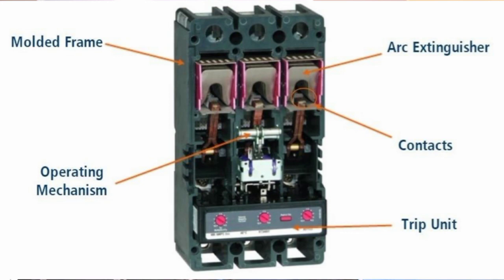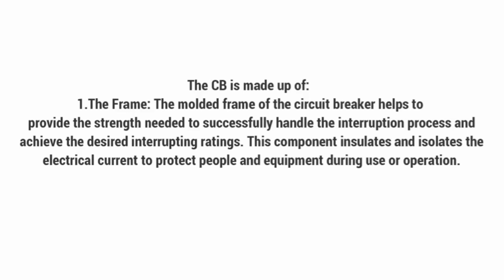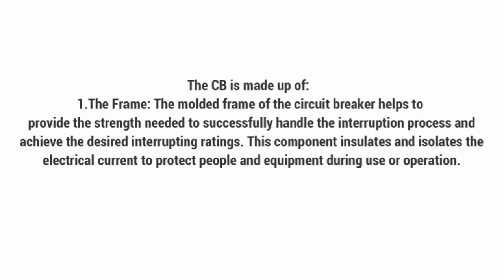Now we're going to discuss the parts of the circuit breaker — what makes it trip on its own and what triggers it. There are five major parts. The first is the frame. The frame is the molded compartment that houses the entire circuit breaker. It provides strength — when the circuit breaker breaks due to over-current, it must withstand that shock without bursting and affecting the operator.